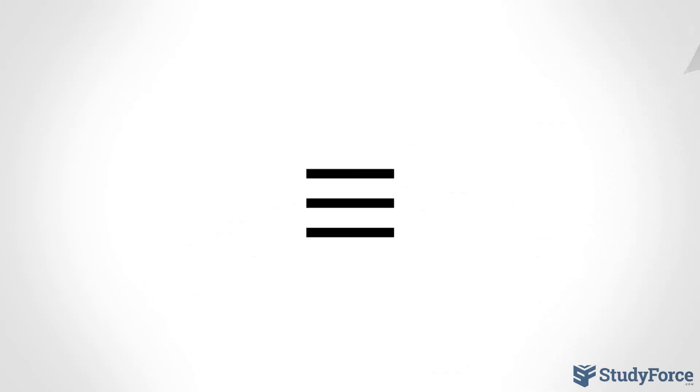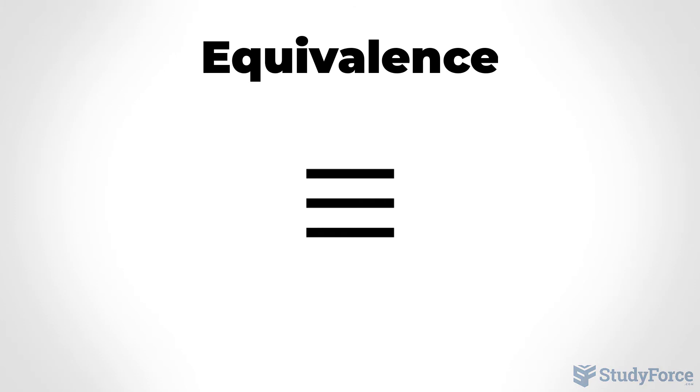Here we have an equal sign with a third line. This symbol is used whenever you want to show that two sets of numbers are equivalent, not equal. For example, sets are said to be equivalent if they have the same number of elements, but the elements are different.